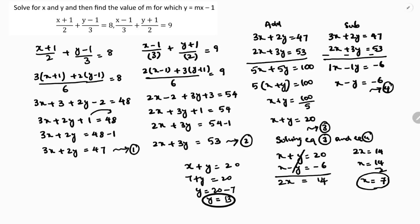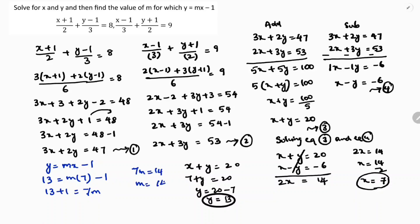Now the question also asks to find the value of m if y equals mx minus 1. Substituting y equals 13 and x equals 7: 13 equals m into 7 minus 1. So 13 plus 1 is 7m, meaning 14 equals 7m, so m equals 14 by 7. Therefore the value of m is 2.